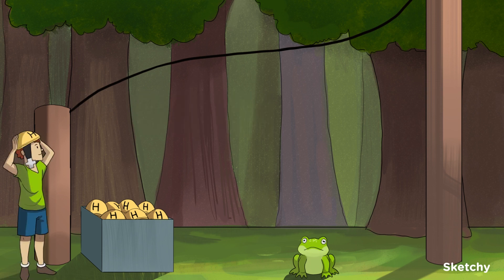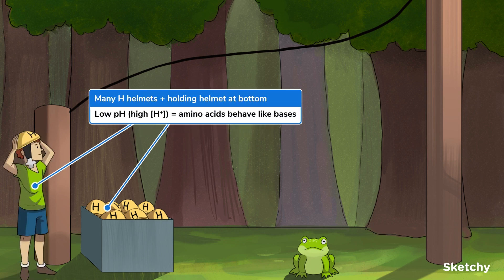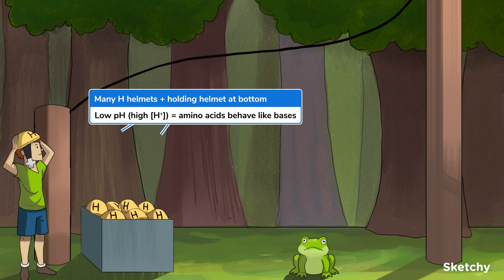In a solution of a low pH, that is, a high concentration of surrounding hydrogen ions, amino acids behave as Bronsted-Lowry bases, accepting protons on their amino ends. That's why the kid at the bottom is next to so many H helmets, which represent protons, and he doesn't want to lose that helmet, so he's holding on tightly. Safety first.